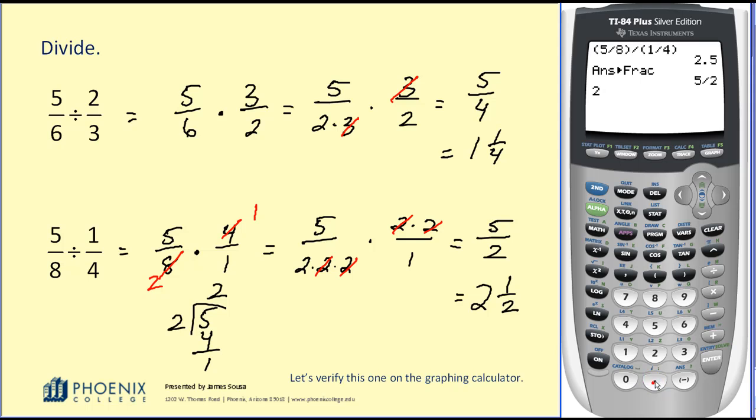If I had 2.5 and I wanted to verify the mixed number, obviously two is going to be the whole number. If I subtract two, that leaves the decimal portion. And now if I hit math, enter, enter, it will convert the decimal portion to the fraction of 1/2. Either way, we verify our answer.